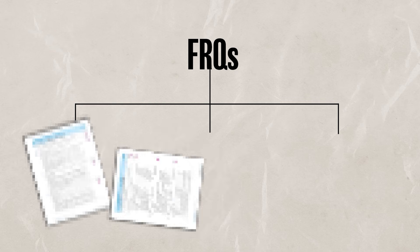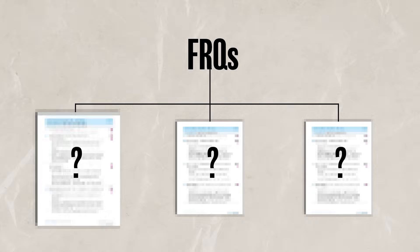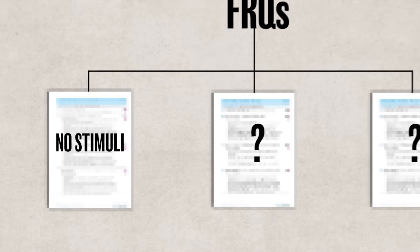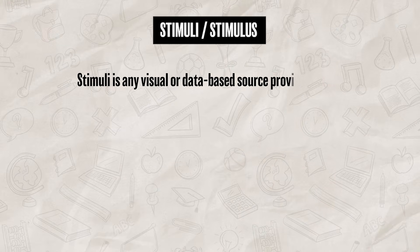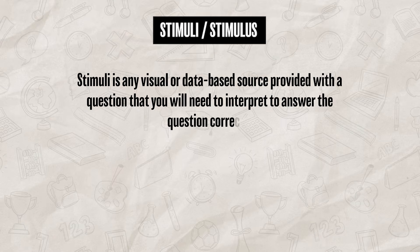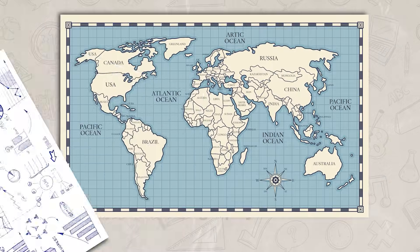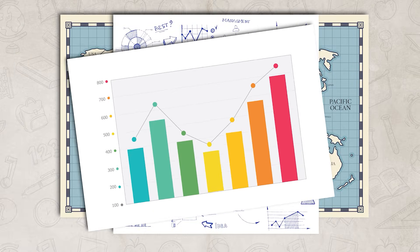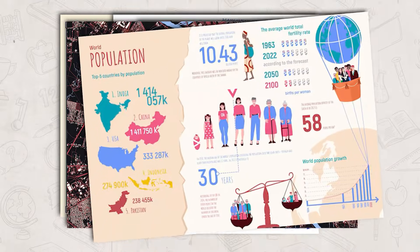There are three types of FRQs that you might see on a unit test or the AP exam. The first is an FRQ that does not have a stimuli. A stimuli or stimulus is any visual or database source provided with a question that you'll need to interpret to answer the question correctly. For AP Human Geography, this can be a map, a chart, graph, table, image, satellite photo, or infographic.